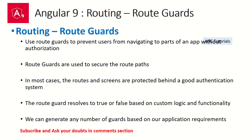Alright, let's talk about route guards. Route guards allow us to prevent users from navigating to any parts of the application without proper authorization. This means you need to secure the route paths — you don't want users accessing all routes randomly. It's based on the user personas in your application.